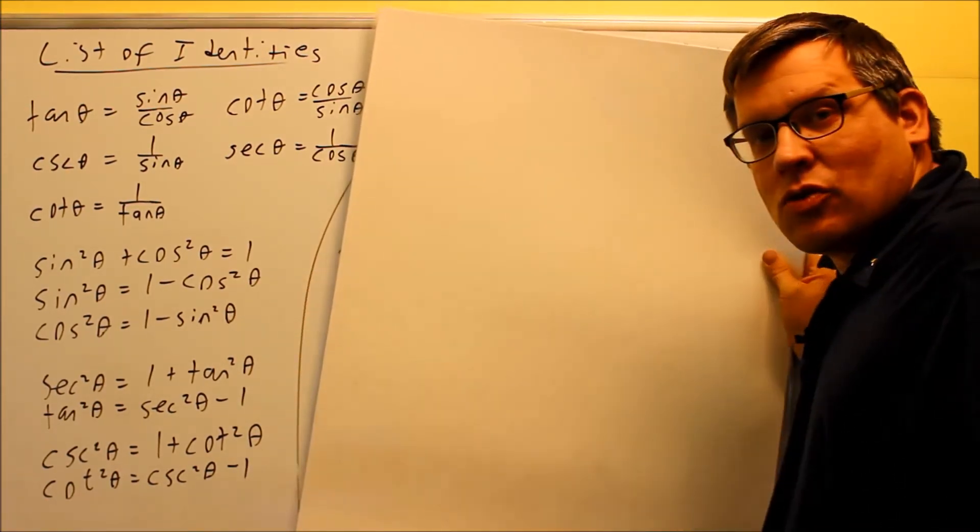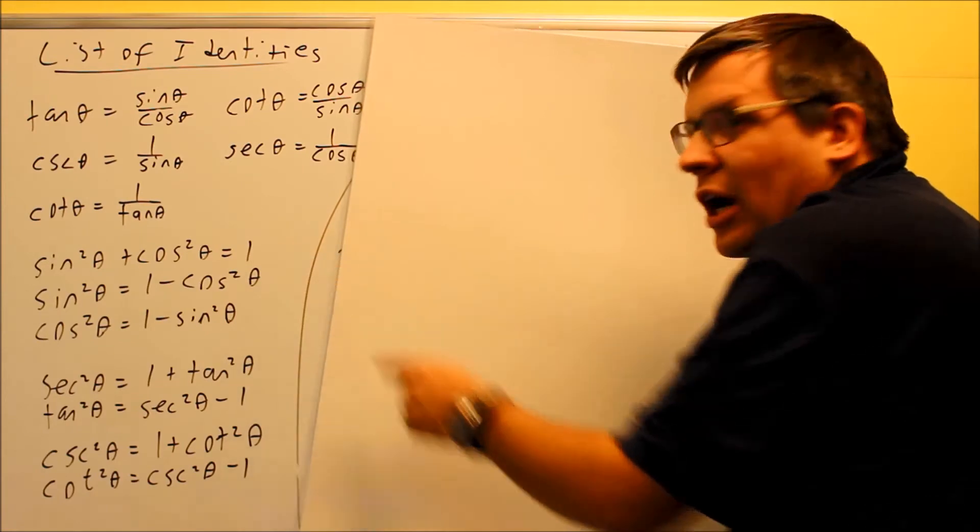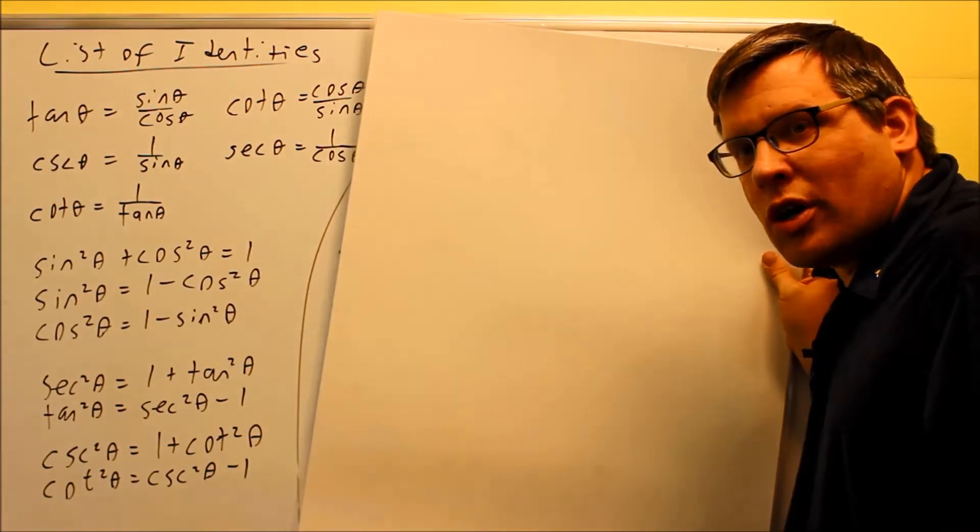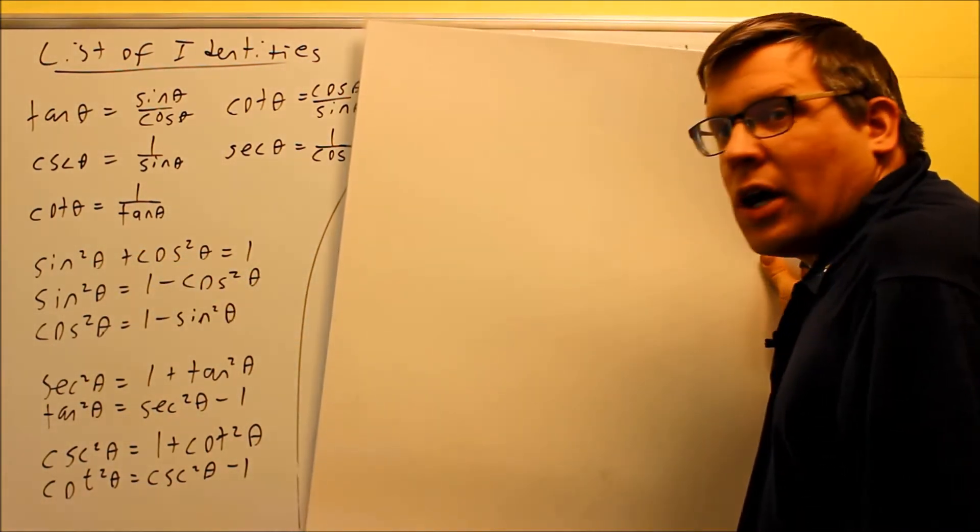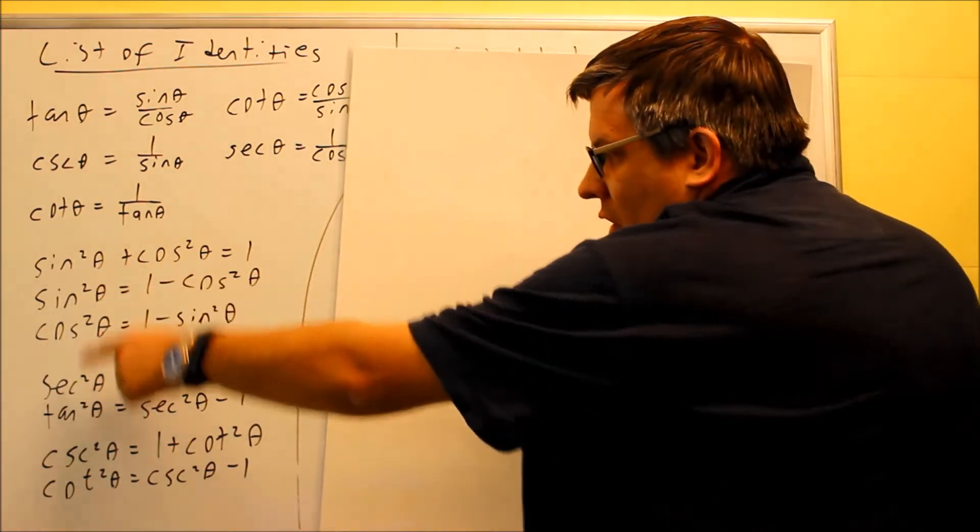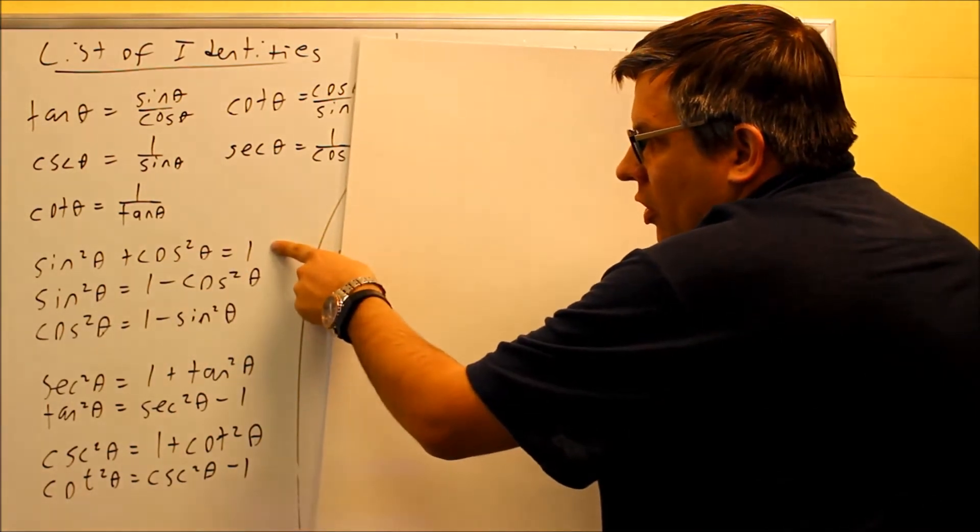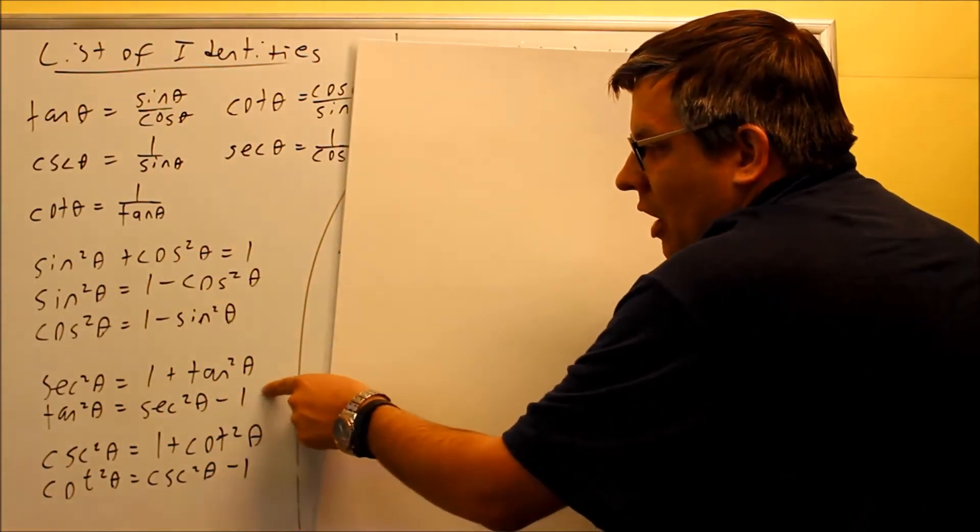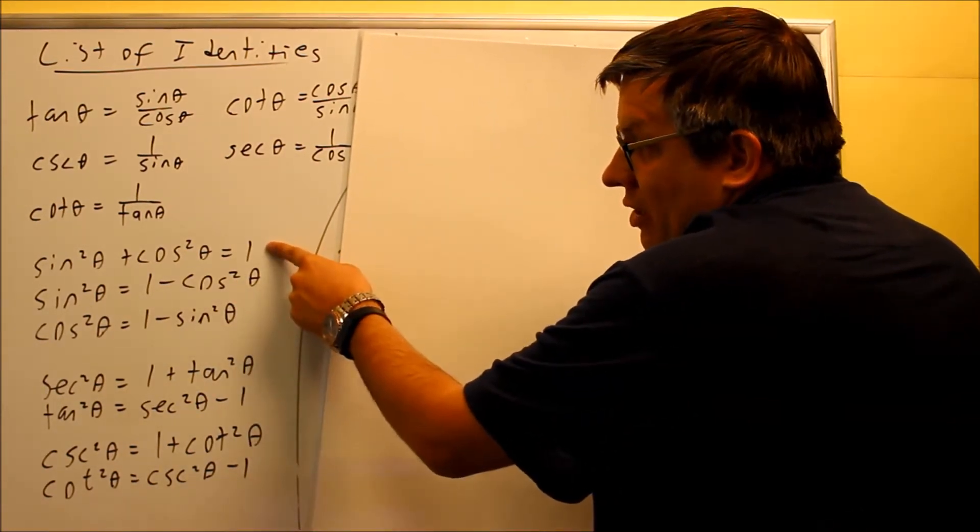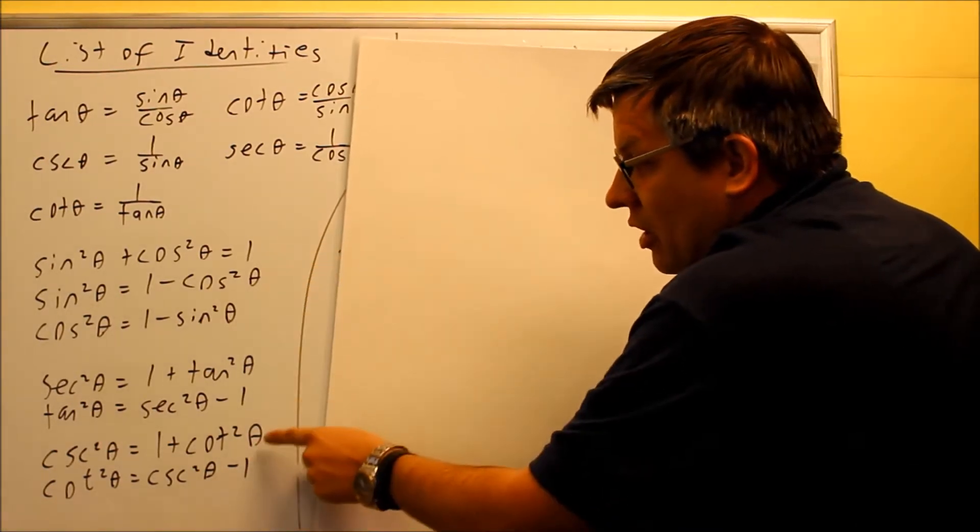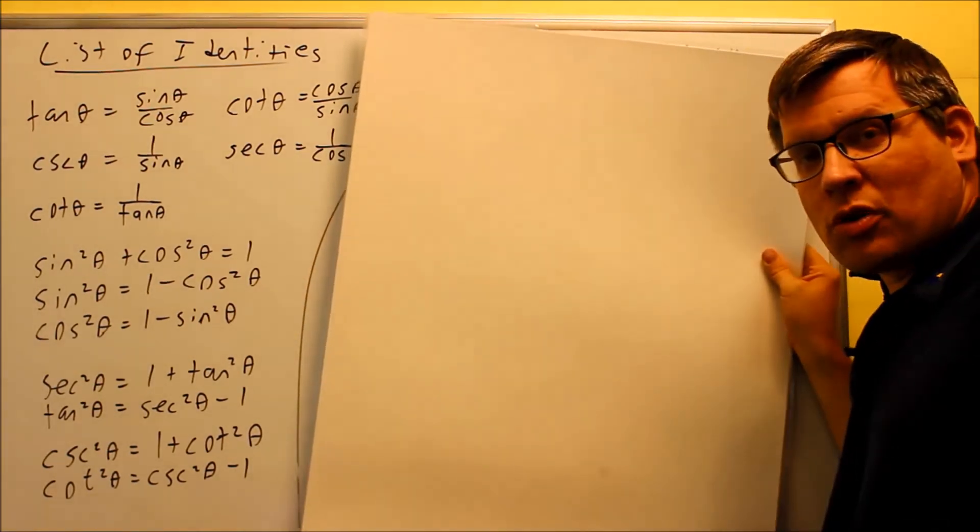Now these down here you may not have seen too much. However, these down here can also be derived from sine squared plus cosine squared equals one. For instance, if you take this equation and divide through by cosine squared, you get sine squared over cosine squared, that gives you tangent squared, and then you get cosine over cosine is one, and you get one over cosine which is secant, so we get a variation of this one here. If you take this equation and divide it through instead by sine squared, then we end up getting the ones down below. So these identities down below actually all come from sine squared plus cosine squared equals one.